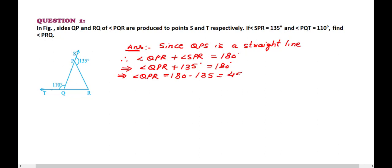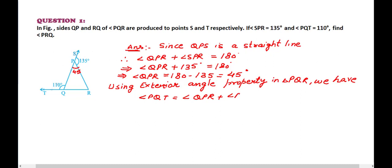That is equal to 45 degrees. Using exterior angle property, we can say that in triangle PQR, angle PQT, that is the exterior angle of this triangle, is equal to angle QPR plus angle PRQ.